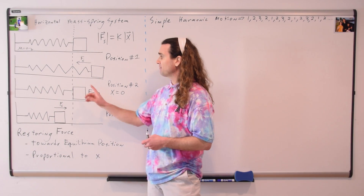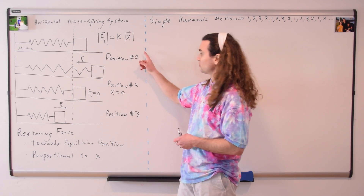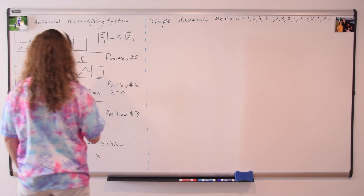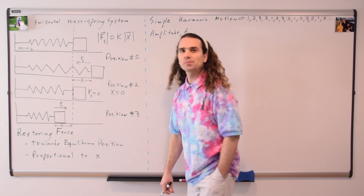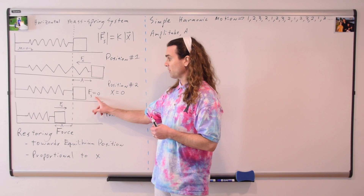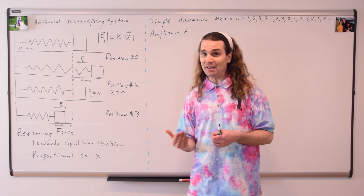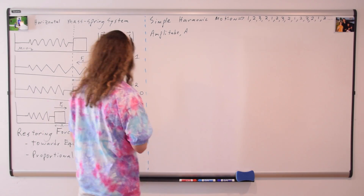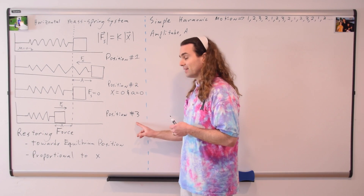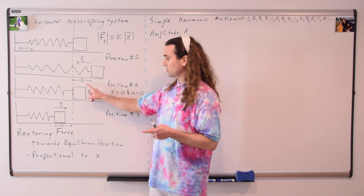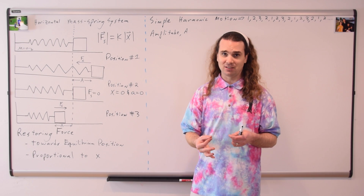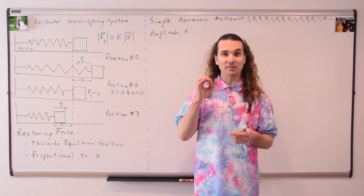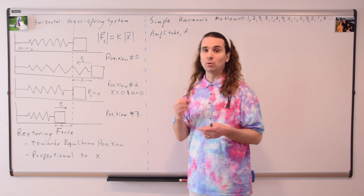Also notice that the mass will never get farther from the equilibrium position than it does at positions one and three. Therefore, we call this maximum displacement from equilibrium position the amplitude. According to Newton's second law, if the force of the spring is equal to zero at position number two, then the net force is equal to zero, and the acceleration at position number two is equal to zero. We can also look at the accelerations at positions one and three. Because the displacement from equilibrium position is at its maximum value, the force of the spring is going to be at its maximum value, and therefore the magnitude of the accelerations at positions one and three will be a maximum.